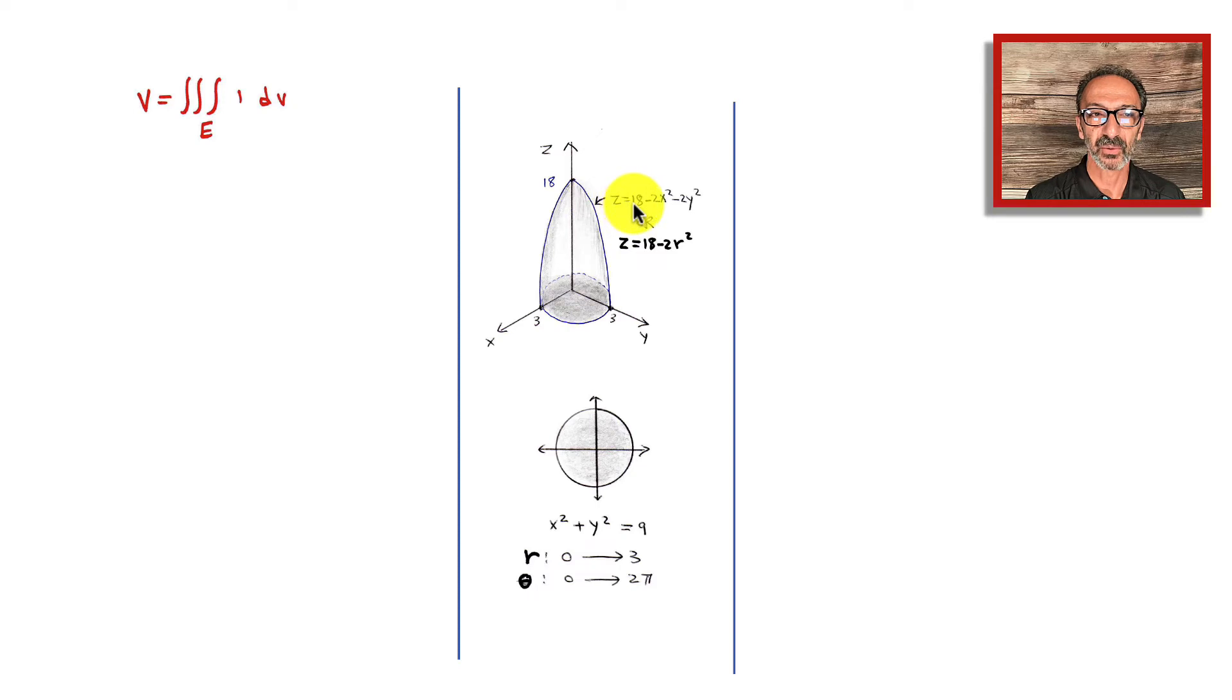The paraboloid is z equals 18 minus 2x squared minus 2y squared, or differently, 18 minus 2r squared. Going back to the triple integration, the first part goes up and down, then when we project we will have two integrations down below using polar coordinates. The first one will go from z equals 0 down below all the way to z equals 18 minus 2x squared minus 2y squared.